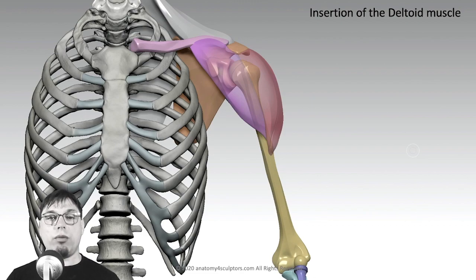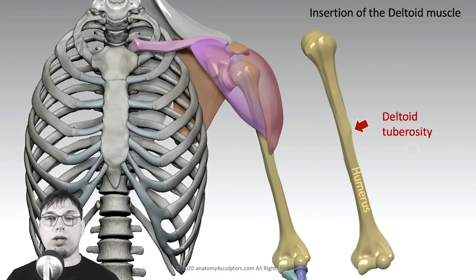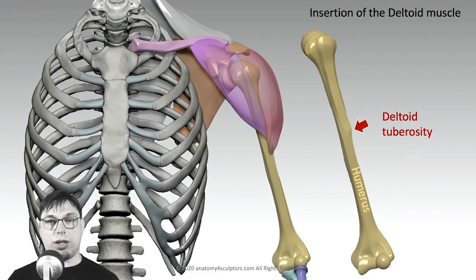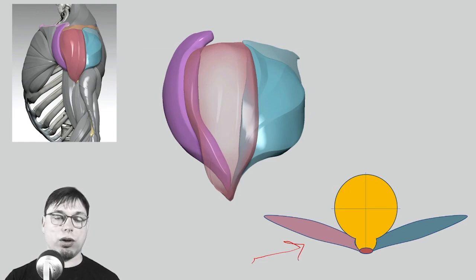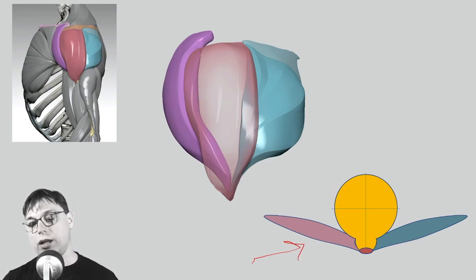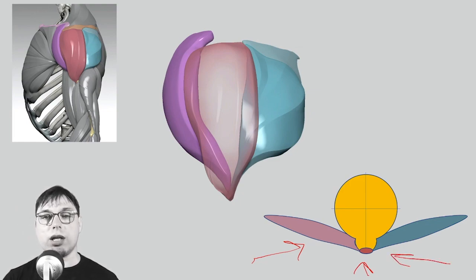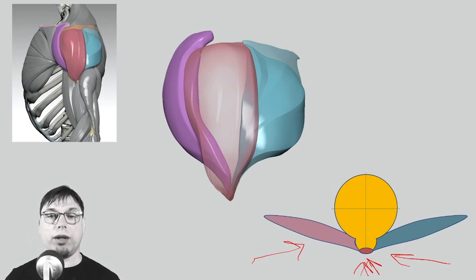The deltoid muscle inserts into the humerus, the long bone of the arm, at a small uneven bump called the deltoid tuberosity, located approximately at the middle or just above the middle of the humerus. The front part of the deltoid inserts on one side of this bump, and the posterior part inserts on the other side. The middle part covers both.